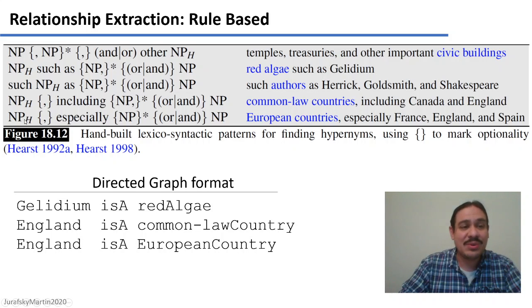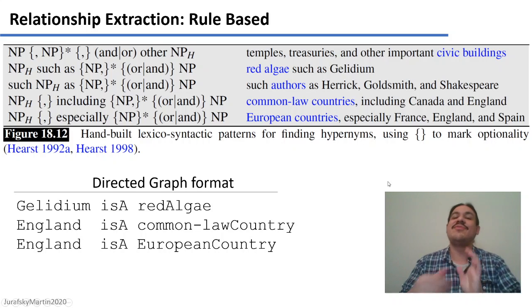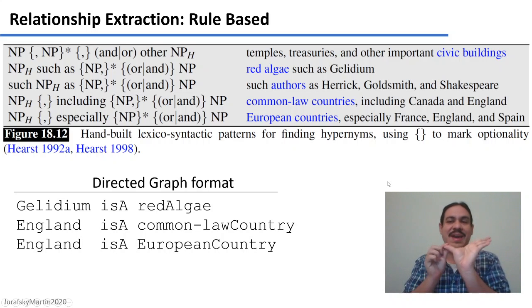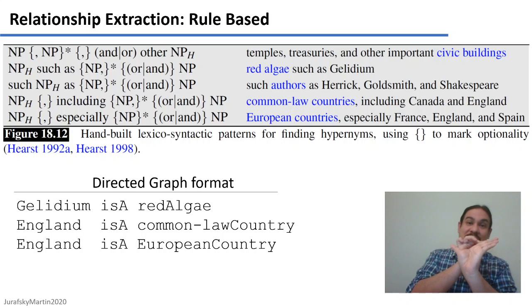In the fifth one, noun phrase, especially other noun phrases, this would match the sentence European countries, especially France, England, and Spain. And from there, we could extract the fact that England is a European country.